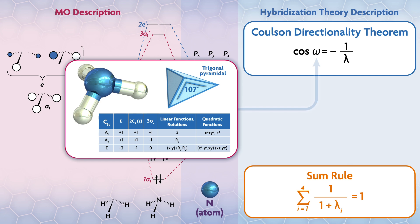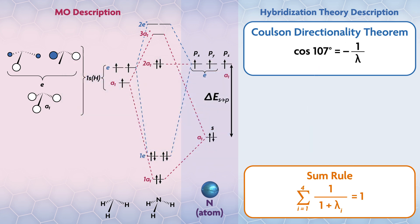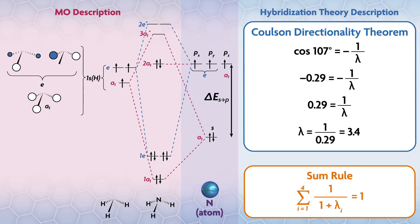We can use the Coulson directionality theorem with equivalent hybrids to find the nature of those hybrids. This involves plugging in 107 degrees for ω and calculating the value for λ. Find cosine 107 degrees, both sides are negative, so we can multiply by negative one on both sides to make them both positive. Then multiply both sides by λ and divide both sides by 0.29, and λ equals 3.4. So the hybrids on nitrogen used to bond to the hydrogens are sp^3.4 hybrids, three of them.